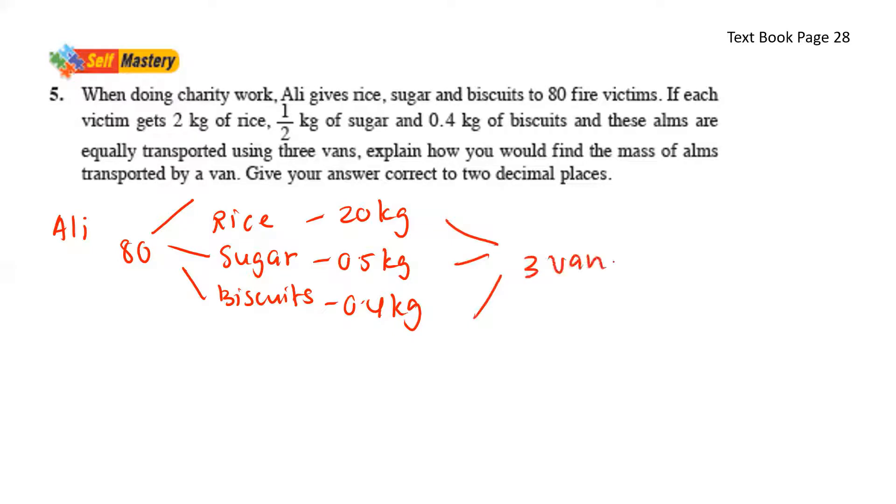Three vans. Explain how you would find the mass of items transported by a van. Give your answers correct to two decimal places. So here we have, for one family, 2 kg, sorry, it's supposed to be 2 kgs.